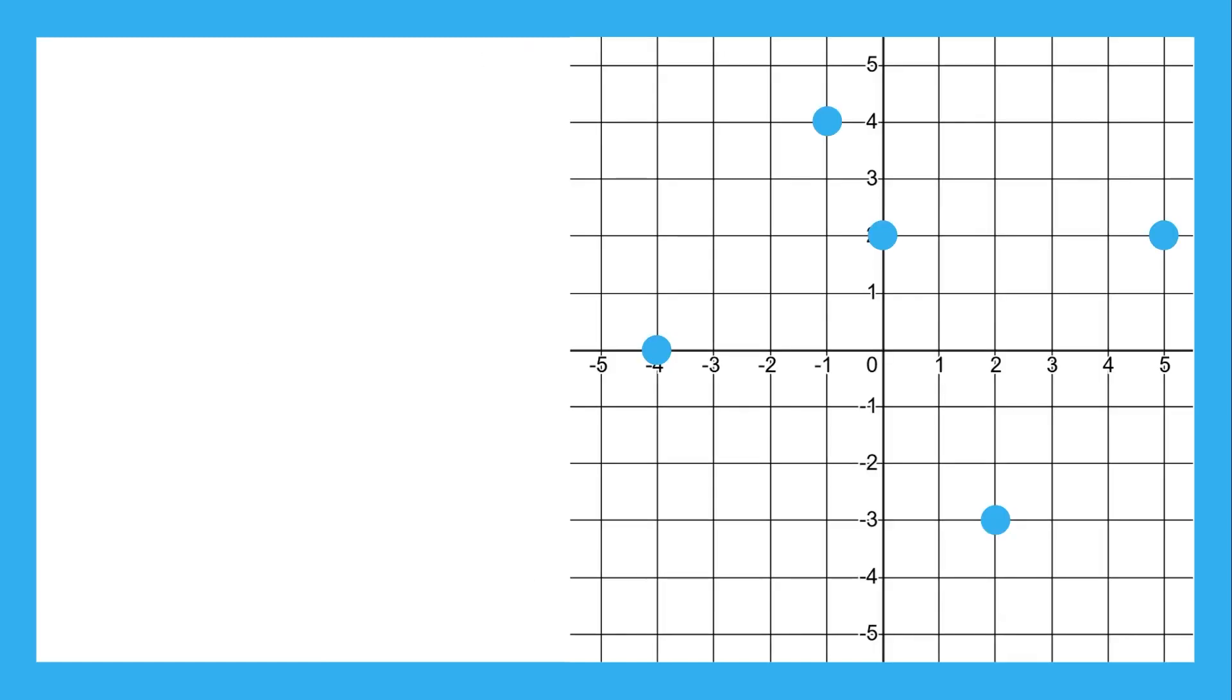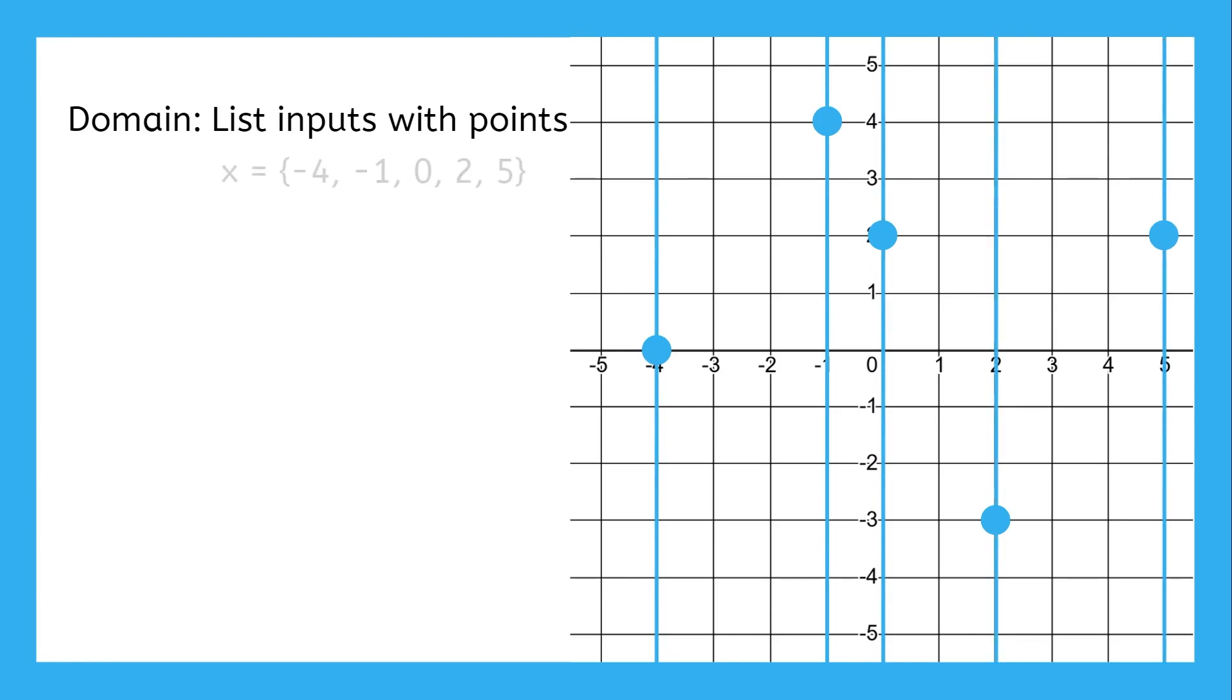Here we have a discrete function. The domain is all the inputs that have an output. Every point has an input connected to an output, so to find the domain, we just list all the inputs where a point exists. There are points at negative four, negative one, zero, two, and five on this graph. So that list of values is the domain.